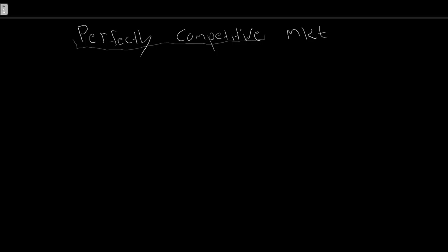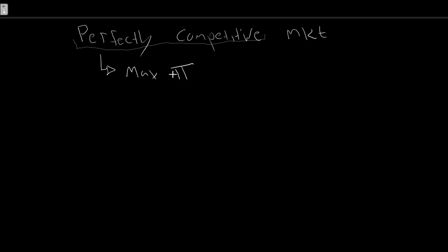Let's quickly remind ourselves of our fundamental assumption as to why firms exist. A perfectly competitive firm will exist to maximize their profit. This little Greek letter pi is used to denote profit. When we're talking about profit, we're actually talking about economic profit — that is, explicit as well as implicit costs being worked out in our cost functions.